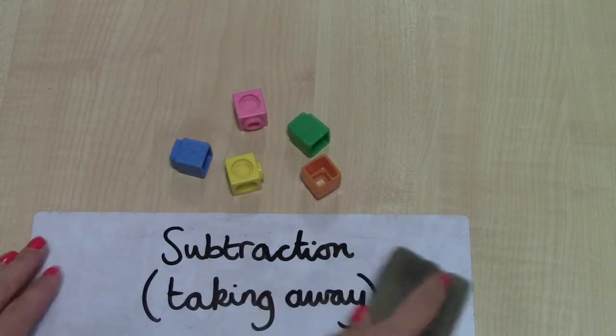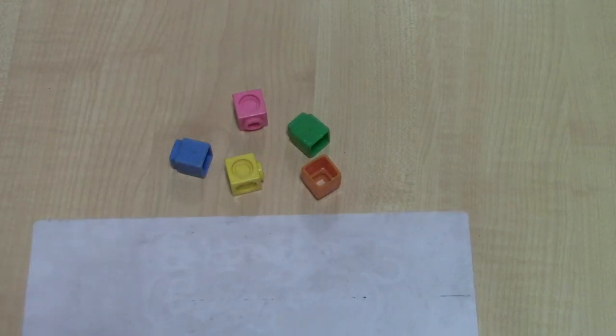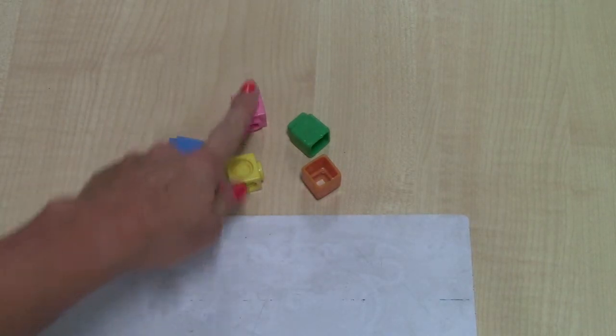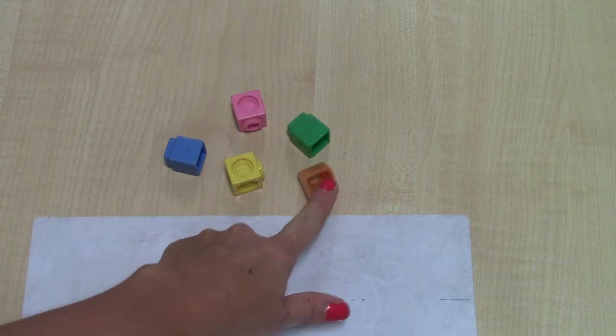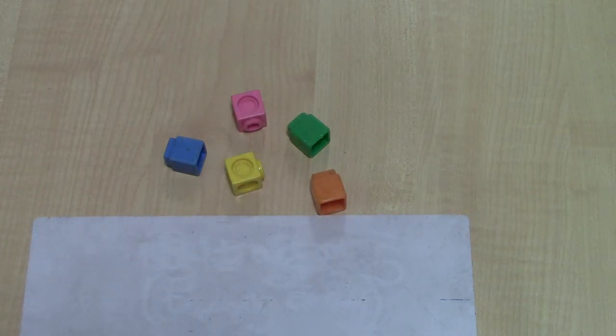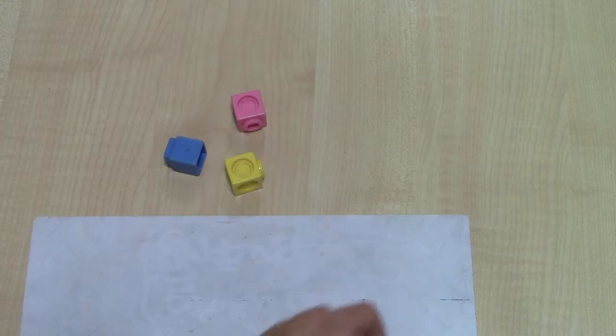So I might start with something like five cubes or any five objects. I'm going to take away two. So I've got one, two, three, four, five cubes here and I'm going to take away one, two.